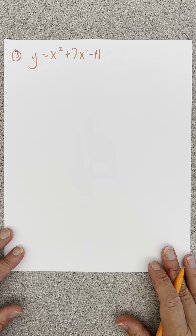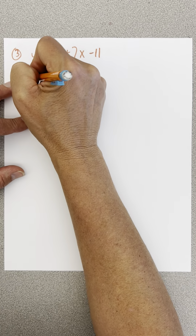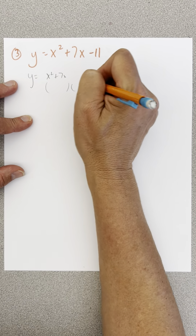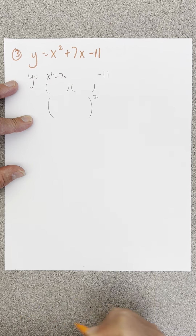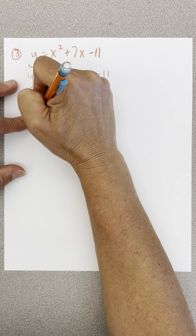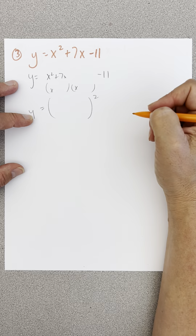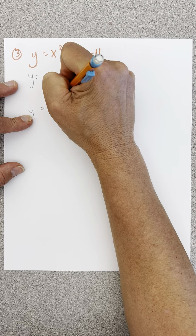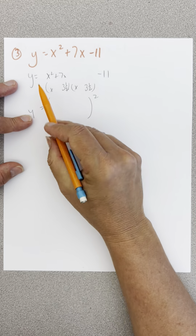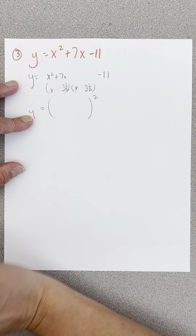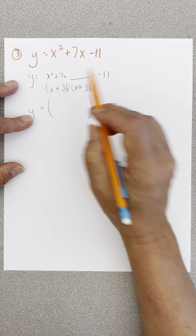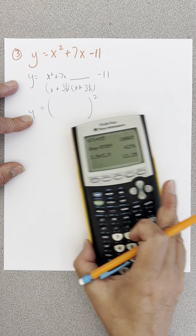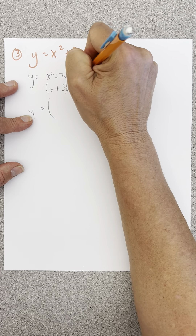Number 3 — what makes this different? y equals x squared plus 7x, letting that negative 11 hang out. Completing the square: x squared is x and x. Outside and inside have to add to 7 — that would be 3.5 and 3.5, because 3.5x plus 3.5x gives 7x. To get this number, I multiply 3.5 by 3.5, getting 12.25. So I have to add 12.25 here to complete the square.